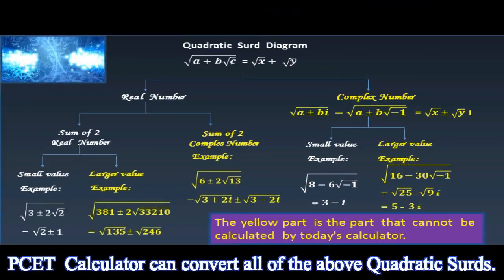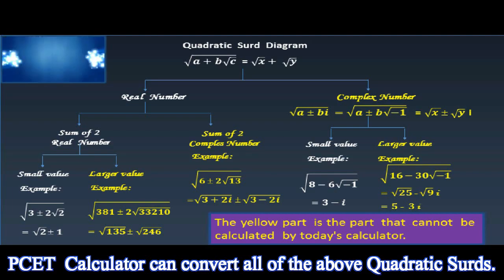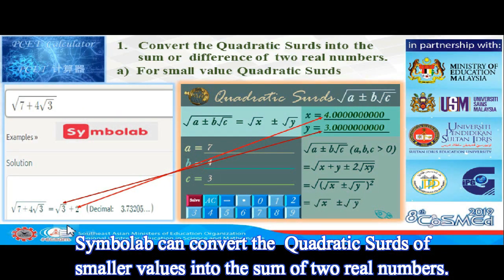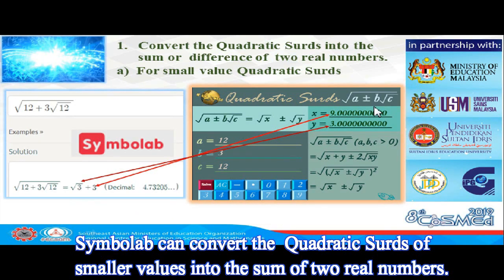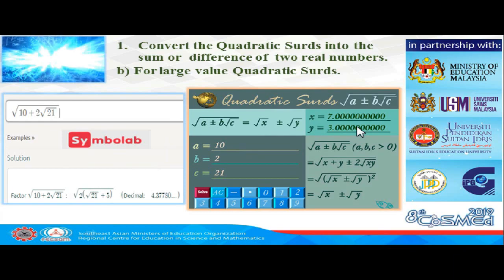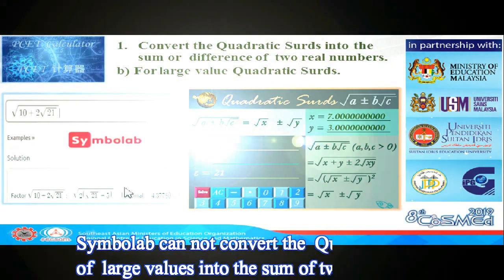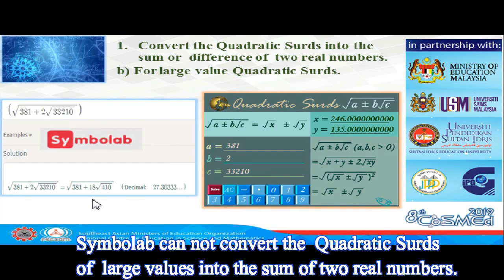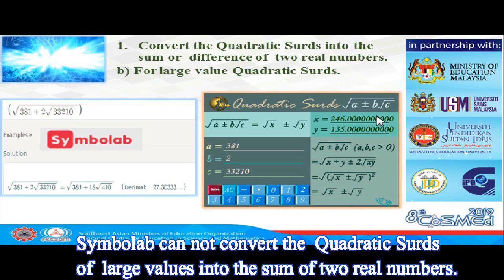The PCET Calculator can convert all quadratic CERDs and has a complete design. Symbalab can convert a small quadratic CERD value into the sum of two real numbers, and PCET Calculator can do this as well. However, for larger values, Symbalab cannot convert the quadratic CERD to the sum of two real numbers, whereas the PCET Calculator can convert larger quadratic CERD values.